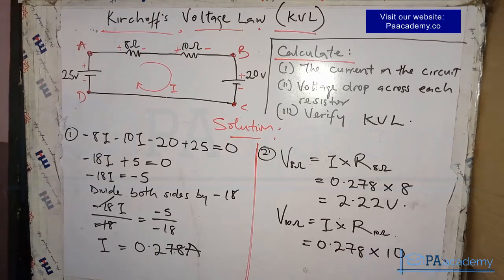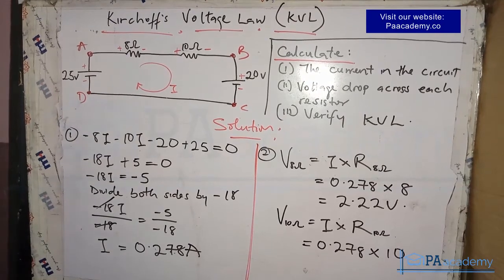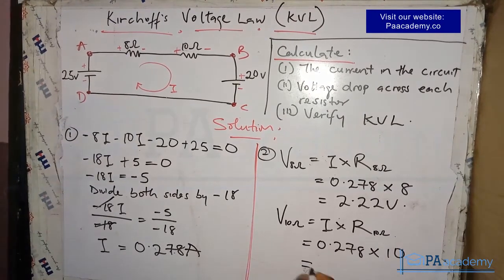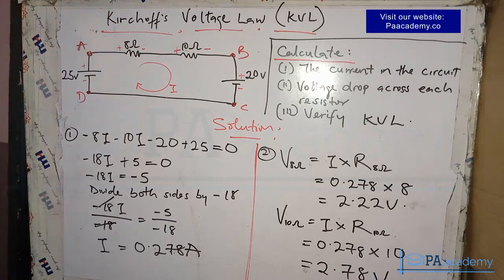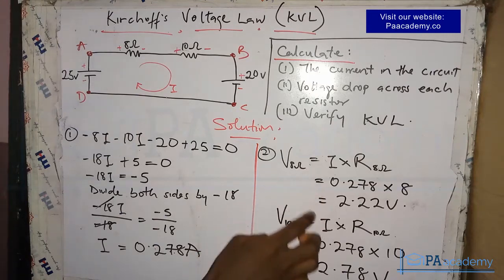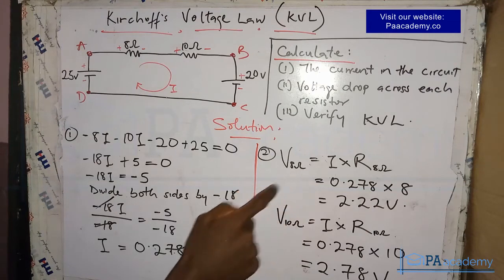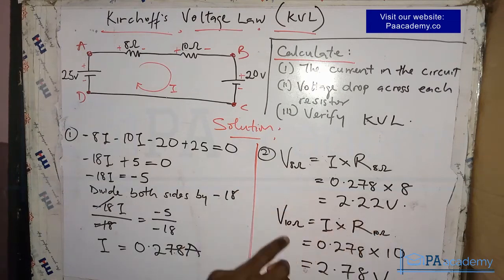That gives 2.78 volts. So the voltage drop across the 8-ohm resistor is 2.22 volts and the voltage drop across the 10-ohm resistor is 2.78 volts. That answers Question 2.